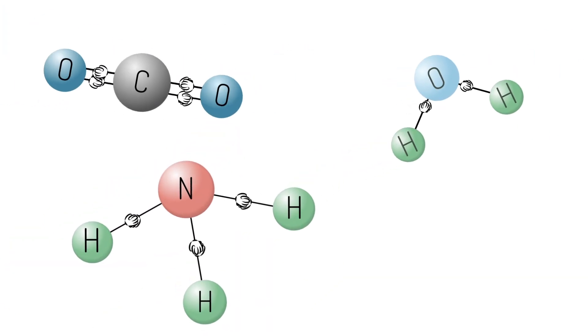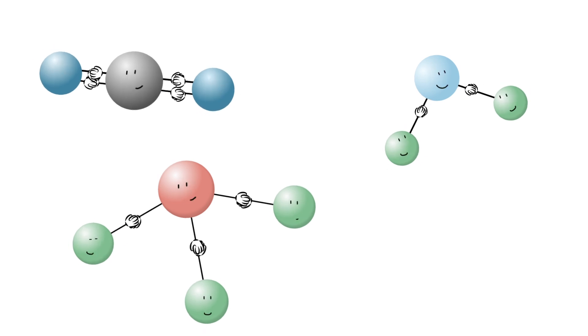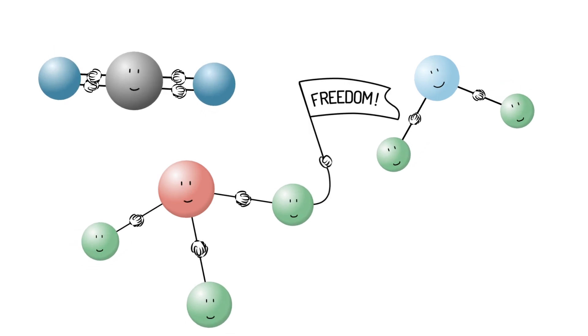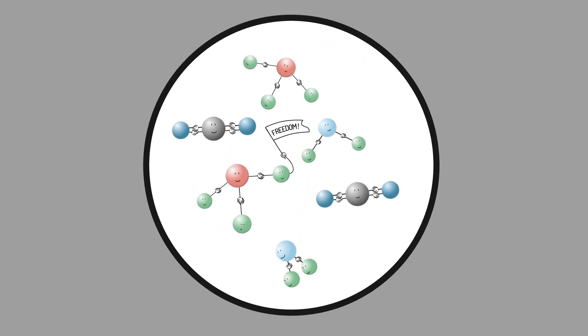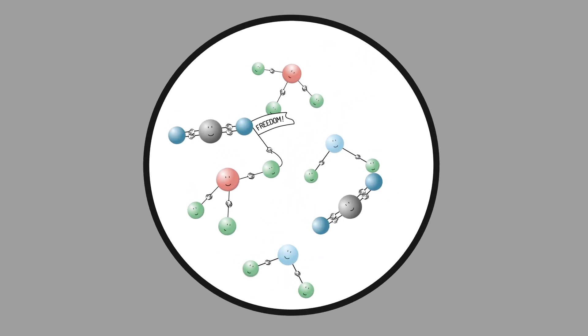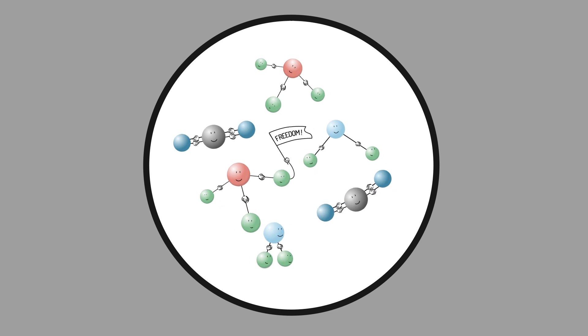For any molecule, you can count up the number of different ways it can move. That corresponds to its degrees of freedom, which in the context of mechanics, basically means the number of variables we need to take into account to understand the full system.